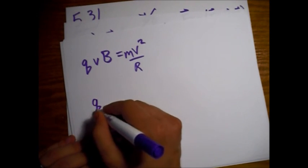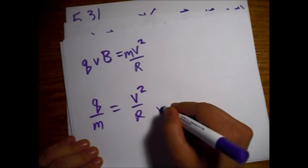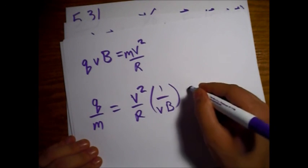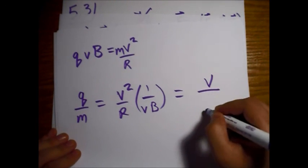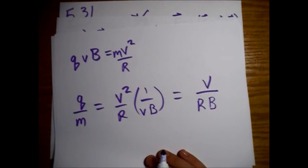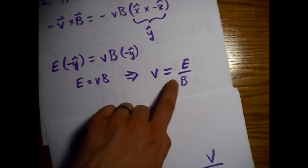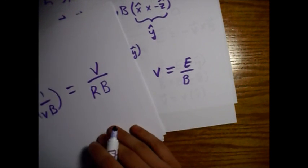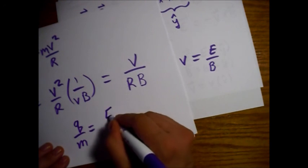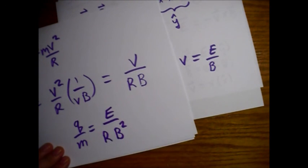We want the charge-to-mass ratio Q divided by M. Dividing both sides by V times B, one of the V's cancels and we're left with Q/M equals V divided by R times B. But we want this in terms of E, B, and R — not V. We already solved for the velocity: V equals E over B. Plugging that in, the charge-to-mass ratio equals E over R times B squared.